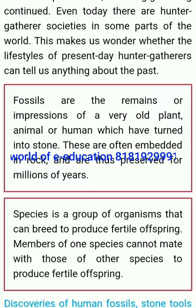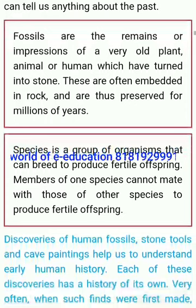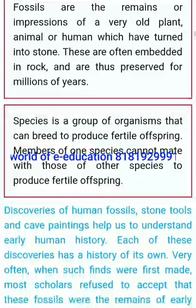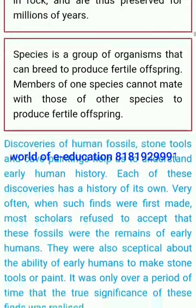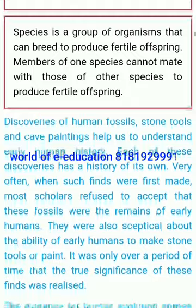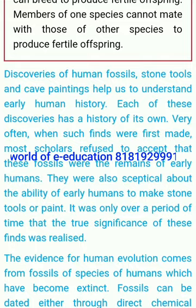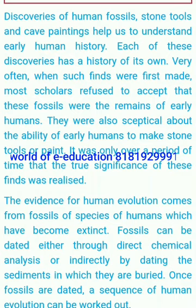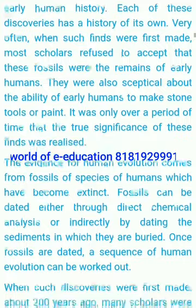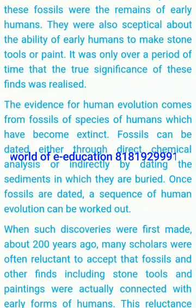This makes us wonder whether the lifestyles of present-day hunter-gatherers can tell us anything about the past. Fossils are the remains or impressions of a very old plant, animal or human which have turned into stone — often embedded in rock and thus preserved for millions of years. A species is a group of organisms that can breed to produce fertile offspring; members of one species cannot mate with those of other species to produce fertile offspring. Discoveries of human fossils, stone tools and cave paintings help us to understand early human history. Very often, when such finds were first made, most scholars refused to accept that these fossils were the remains of early humans. They were also skeptical about the ability of early humans to make stone tools or paint. It was only over a period of time that the true significance of these finds was realized.